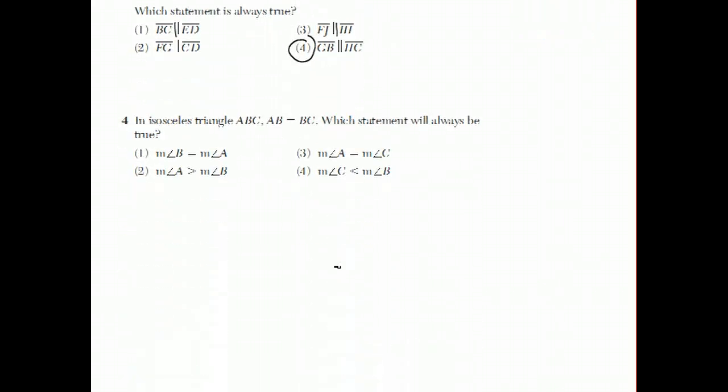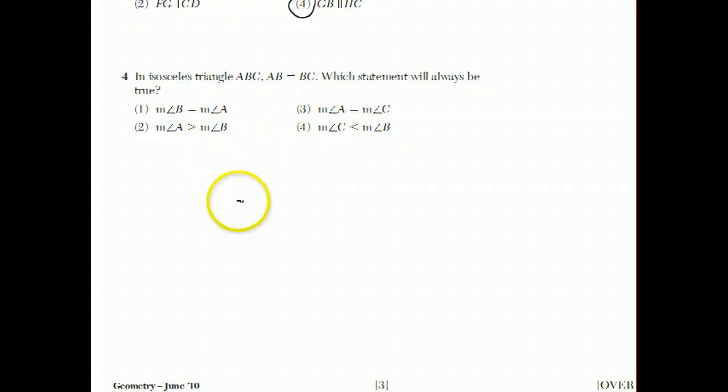Moving on to question four. In isosceles triangle ABC, AB is, I think this should say, is congruent to BC. Which statement will always be true? Well, a question like this, the best thing to do is to draw a diagram. It says it's an isosceles triangle, so I'm going to draw an isosceles triangle. And instead of just labeling the vertices, AB and C, I want to be real careful. Since AB is congruent to BC, these are the two equal sides. Notice how they both have a B in them, so if I put the B here and the A here and the C here, I have an isosceles triangle where AB is congruent to BC. Well, there's a rule about isosceles triangles that if the sides are equal, the angles across from those sides are also equal, and that's why the answer to this question is choice three. Measure of angle A is equal to the measure of angle C.